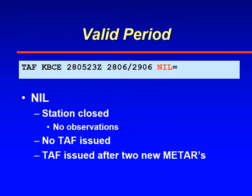There are times when an airport may not have weather observations — the station is closed, perhaps — so they won't issue a TAF for that location. In that case you'll see TAF followed by NIL at the end. That happened in New Orleans with Hurricane Katrina: when the ASOS station went offline, they couldn't make TAFs for the airport.